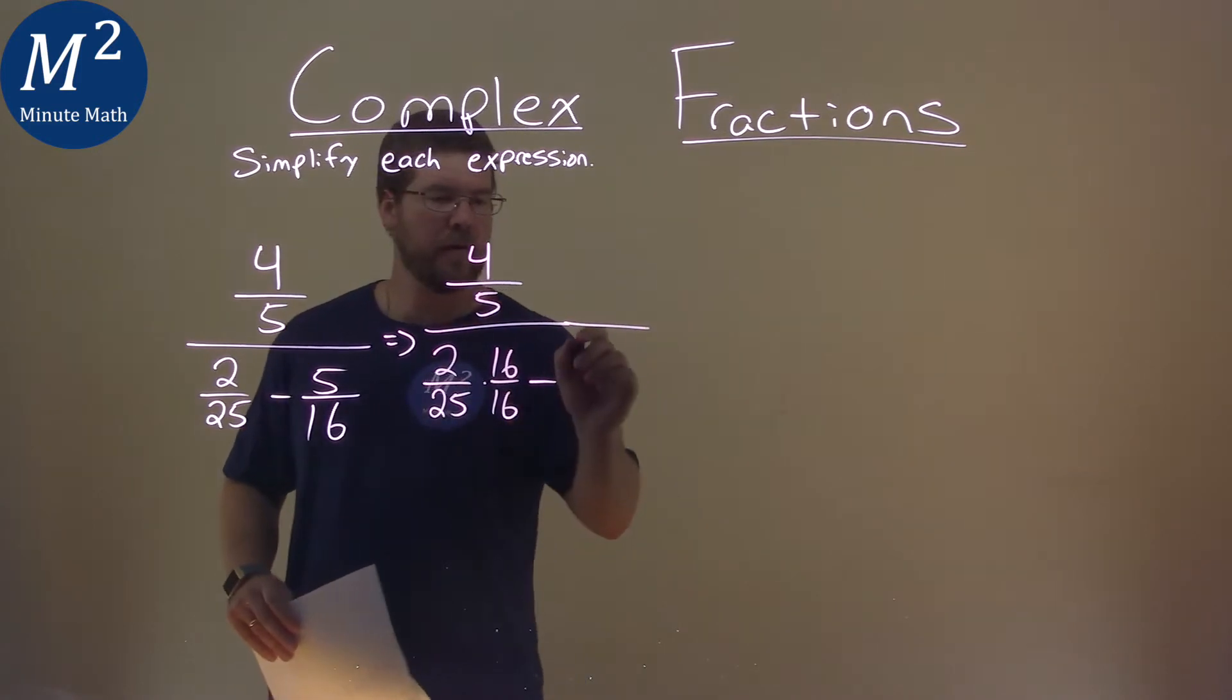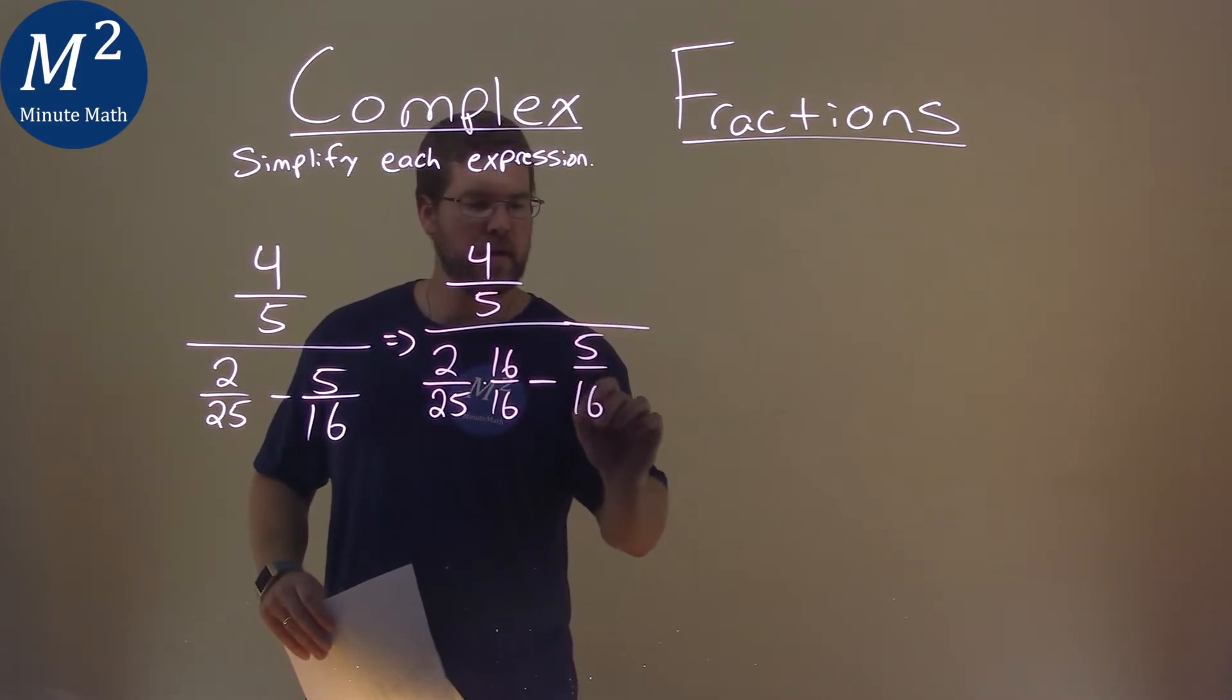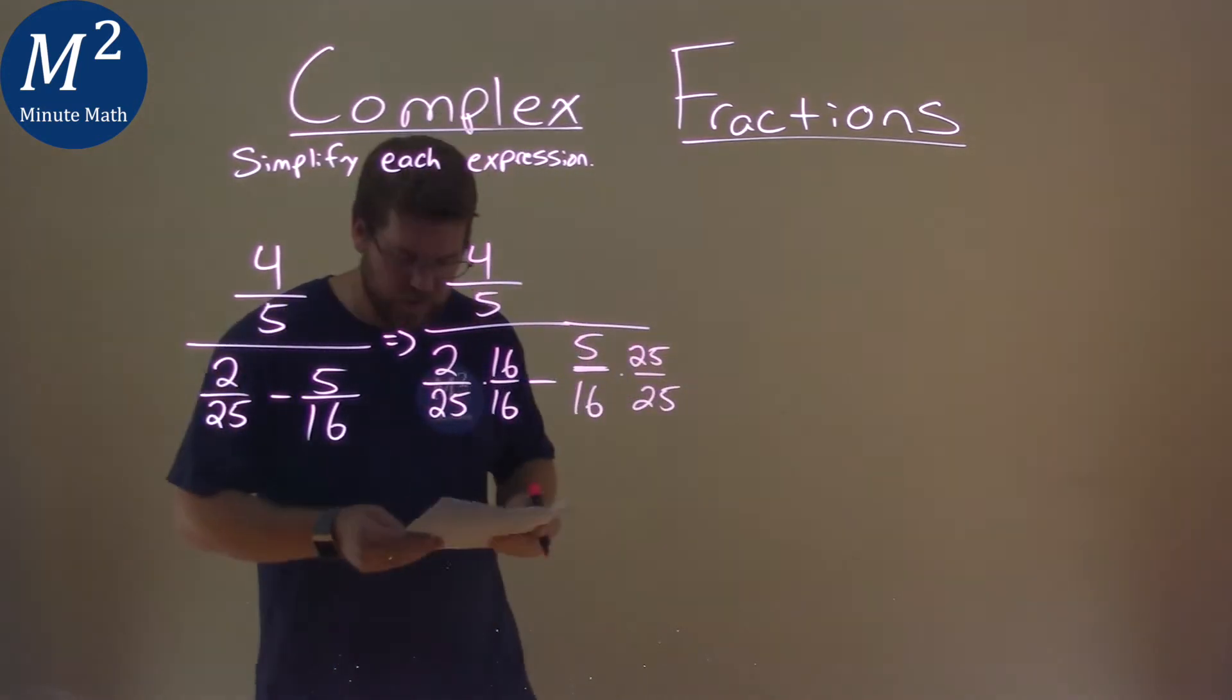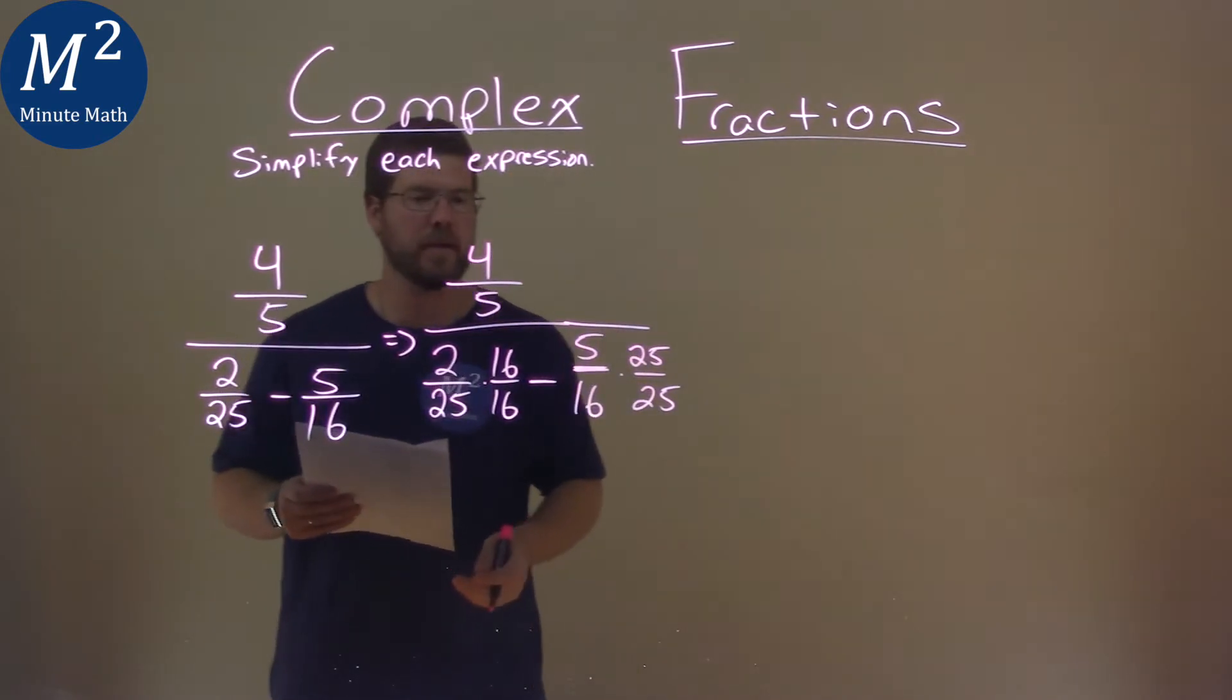Do the same thing with the second half, 5 over 16, and multiply that by this denominator, 25 over itself. Kind of quick, easy way to do it, to find a common denominator.